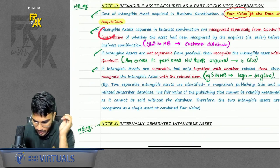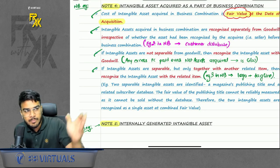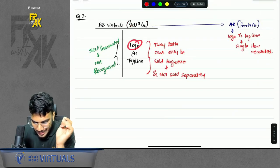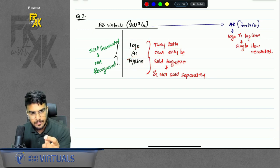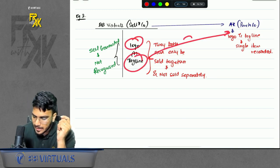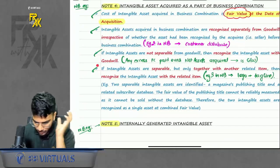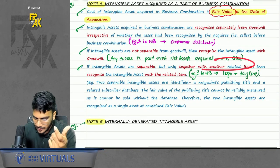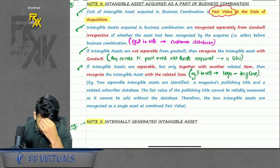We can record a customer database irrespective of whether it was shown in the books of the selling company or not. The last example: if there are two intangible items which can only be sold together, meaning they are identifiable only together, the purchasing company will also record them as a single item. So if an intangible is separable but only together with another related item, then recognize the intangible with the related item.